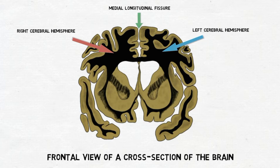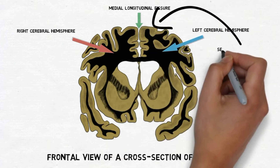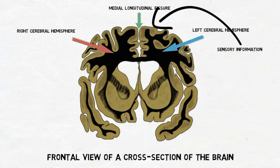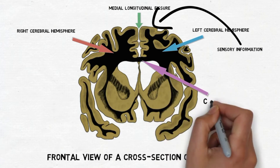The importance of this communication can be seen with the processing of sensory information, which is typically received first in one hemisphere and then must be shared with the other hemisphere. When you type on your keyboard, for example, information about the feel of the keys is sent up from your right hand to the primary somatosensory cortex on the left side of your brain. That information must then be shared with the right side of your brain as well. That's where the corpus callosum comes into play.